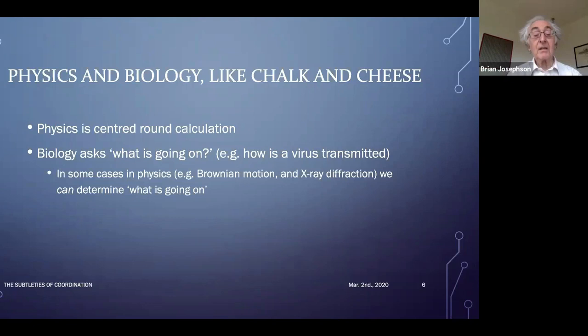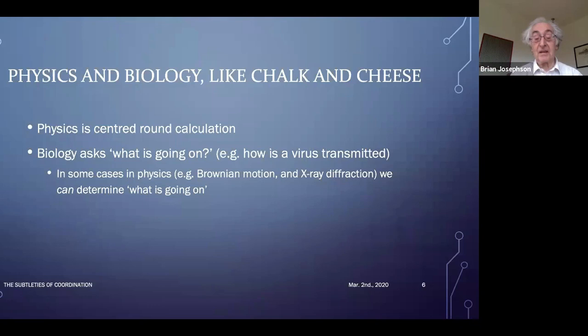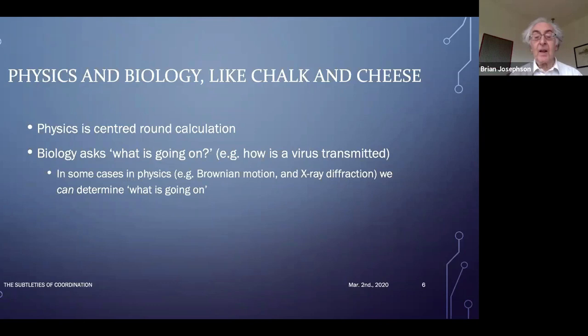Sometimes in physics we can find out what is going on. Two examples: Brownian motion and x-ray diffraction. Brownian motion is the motion of a particle in a fluid — you can deal with the mathematics as Einstein did, but we know what's really going on is that atoms are colliding with the object and making it move. With x-ray diffraction, we know what's going on is that there's a crystal structure. So what we really want to know is what's going on in the mysterious quantum realm — and that's the aim of this project.